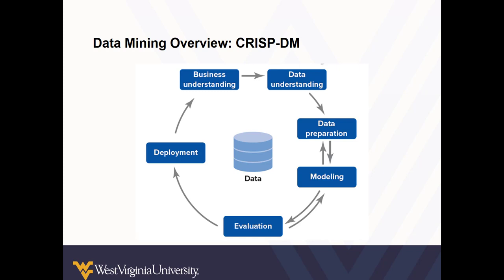The CRISP-DM approach is outlined by this diagram. Generally, when approaching a new problem, you start with business understanding — understanding the underlying application and context of the problem. Once that is understood, data is obtained and time is spent evaluating the data to fully understand its characteristics. Once the strengths and weaknesses of the data are understood, data preparation takes place and those weaknesses can hopefully be remedied. This is where imputation or omission might be necessary. Once the data are ready, modeling can take place.